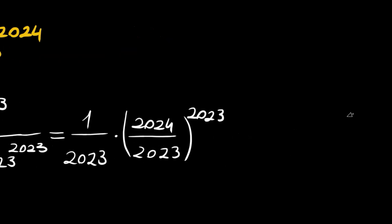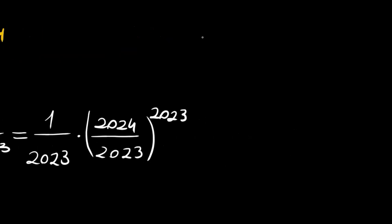We want to decide this number. Now this second part, the fraction 2024 divided by 2023, can be written as 1 plus 1 over 2023.